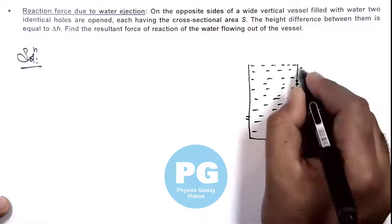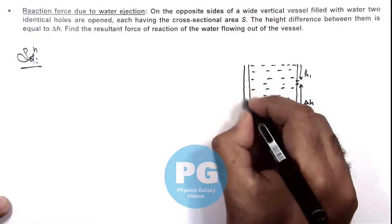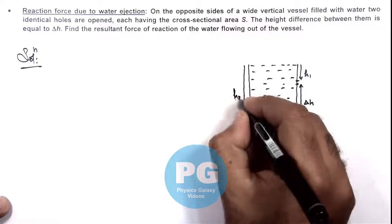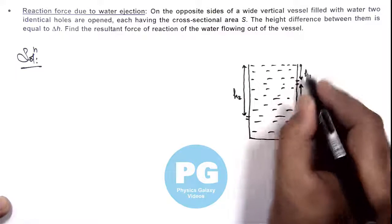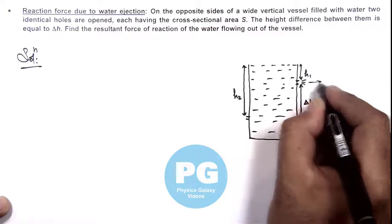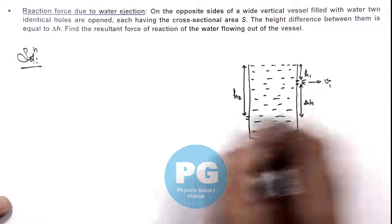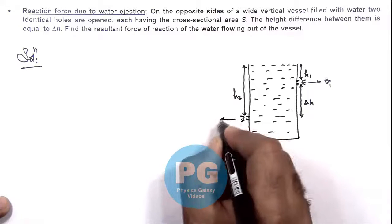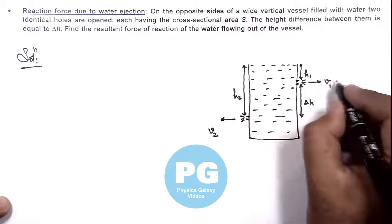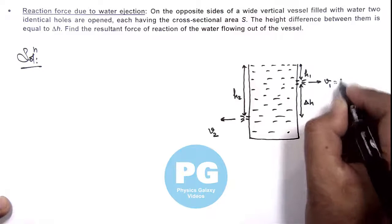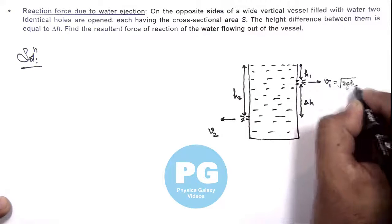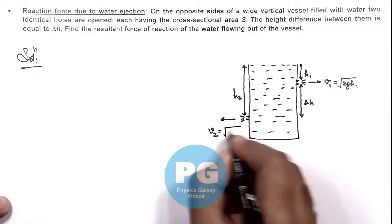And say if this hole is at a depth h1, and this hole we consider at a depth h2. Now in this situation from here water will eject out with a velocity v1, from here it will eject out with a velocity v2. And efflux velocity by Torricelli's theorem we know is root 2gh1, and here it is root 2gh2.